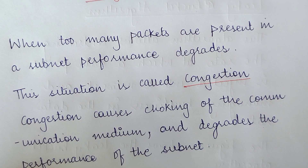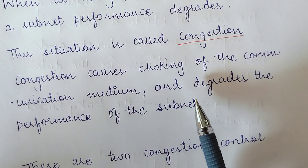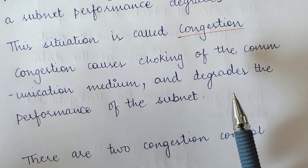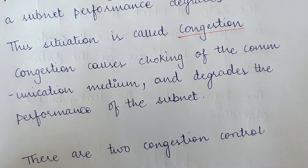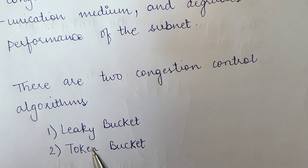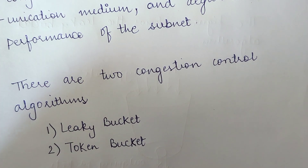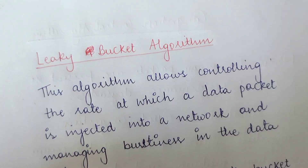Similarly, in a network we have congestion when there are more packets than the capacity of the network medium. The medium gets choked, degrading performance — packets take longer to transmit, and in some cases packets may even be dropped. To deal with congestion we have congestion control algorithms. There are two basic ones: the leaky bucket algorithm and the token bucket algorithm. Today we are going to study the leaky bucket algorithm.